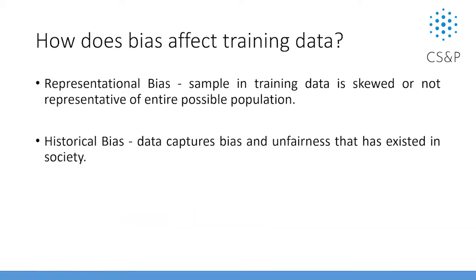How does bias affect the training data? There are two types of bias in current training data. One is representational bias, coming from the sampling process — when we sample training data and the method is skewed or not representative of the entire population. For example, if we only use female or male data to train a model, it will have discrimination. Another is historical bias — the data captured includes unfairness that already existed in our society. So we need to diminish both representational and historical data bias.